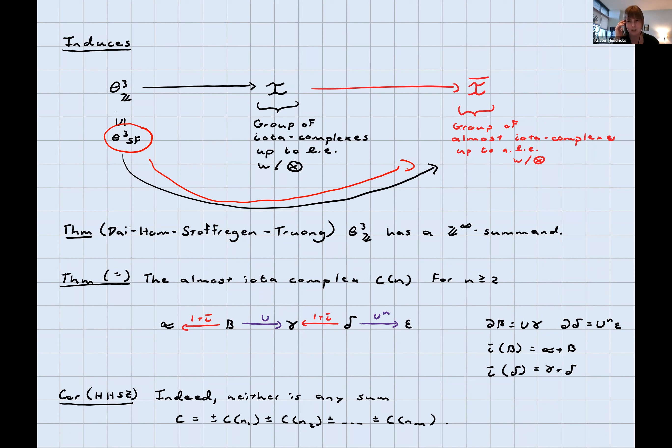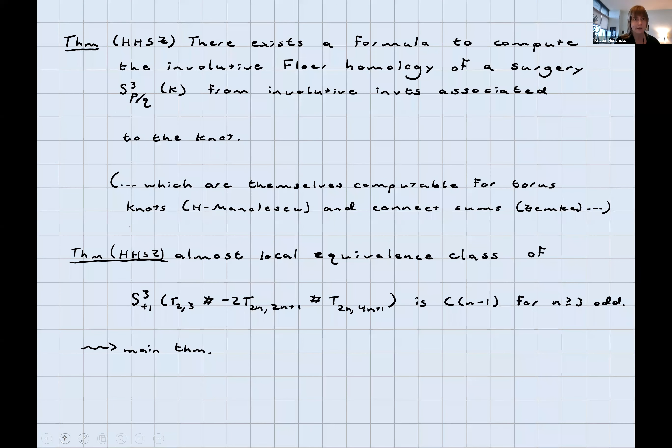Now the name of the game is realize those complexes, or realize infinitely many of them, as the almost iota complexes associated with some three manifolds. Then those three manifolds are outside of the group generated by the Seifert-fibered spaces, or rather their homology cobordism classes are. Of course I'm going to tell you that that's what we did. Here's the slide that has all the work.